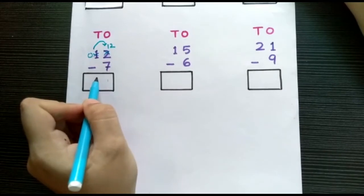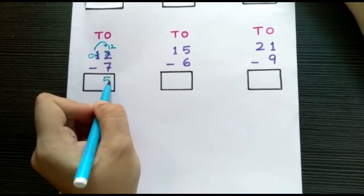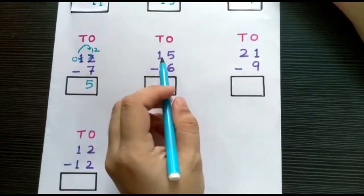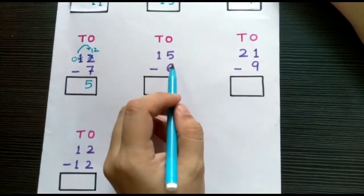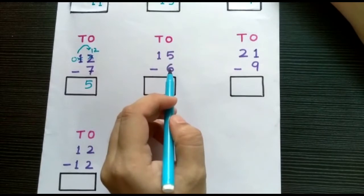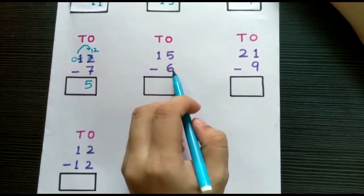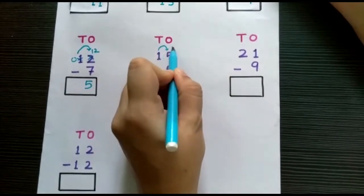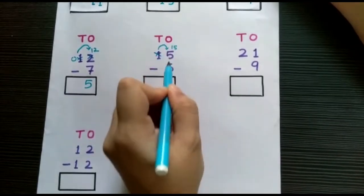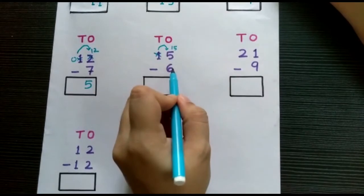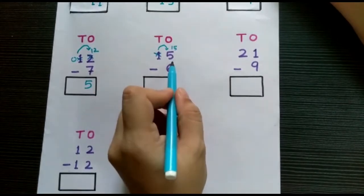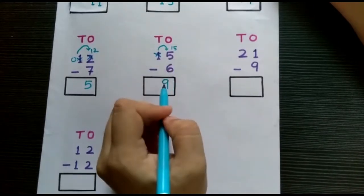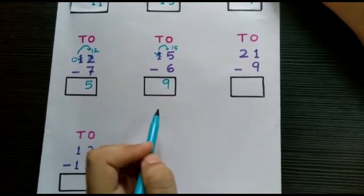So children, 12 minus 7 is 5. Next we have 15 minus 6. In the ones place we have 5 minus 6, but since 5 is smaller than 6 we will borrow from the tens place. If we borrow from the tens place, 5 will become 15. So 15 minus 6 is 9. Therefore children, 15 minus 6 is 9.